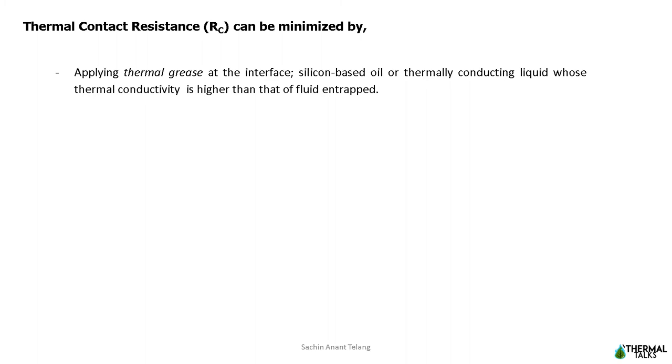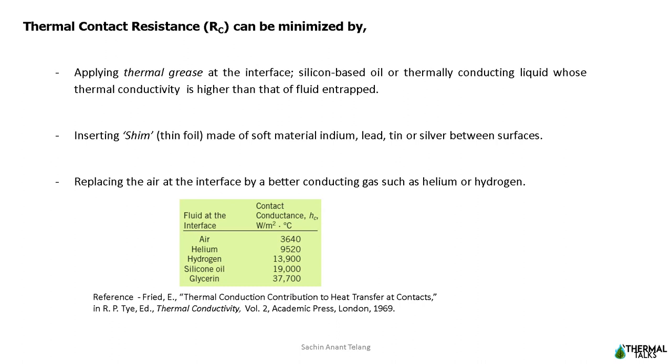Let us see how we can minimize thermal contact resistance. The thermal contact resistance can be minimized by applying high thermal conductivity liquids called thermal grease such as silicon oil on interfacing surfaces before they are pressed against each other. This is commonly done when attaching electronic components to heat sinks. We can reduce contact resistance by inserting soft materials such as indium, lead, tin, or silver foils between interface surfaces. For maximum effectiveness, the foils must be very thin. We can also replace air by better heat conducting gases such as helium or hydrogen to reduce thermal contact resistance.